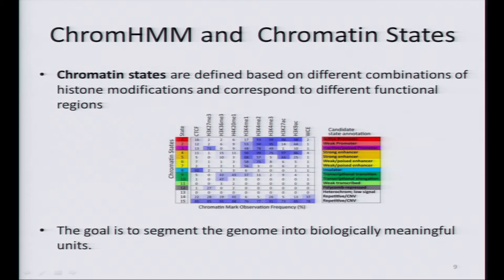In this table from the original paper, the rows are chromatin states with names such as active promoter, weak promoter, inactive promoter, strong enhancer, and so on. The columns are the histone modifications used to call these chromatin states. Going row by row, you can see that different combinations of histone modifications correspond to different functional regions.